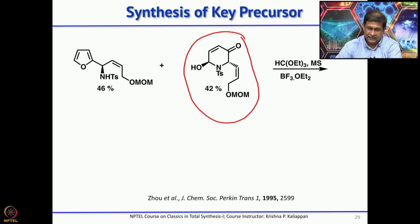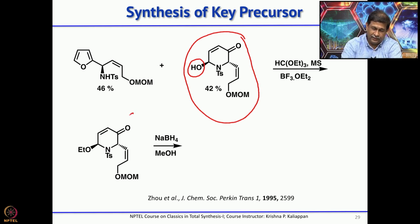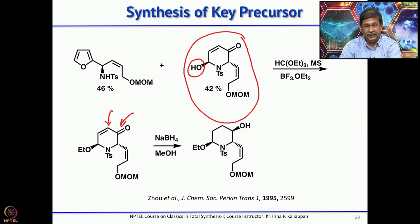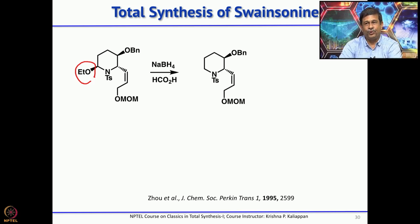Once you have this compound, the next step is to convert the OH into an OEt group by treating with triethyl orthoformate and a Lewis acid like BF₃·Et₂O in the presence of molecular sieves, converting the aminol OH into the corresponding ether. Once you have this ether, sodium borohydride in methanol reduces not only the ketone but also the double bond if excess is used — so both reductions happen, giving the alcohol. The alcohol was then protected as a benzyl ether with NaH and benzyl bromide. The OEt group was removed by treatment with formic acid, forming the iminium which is reduced with sodium borohydride to form the 6-membered N-tosyl piperidine.